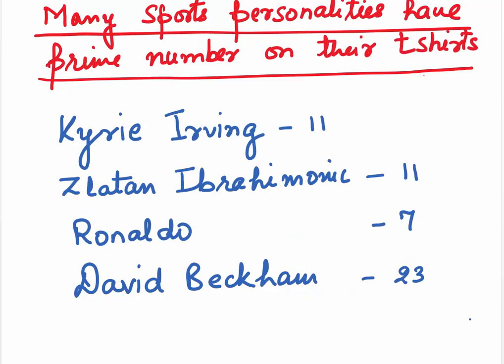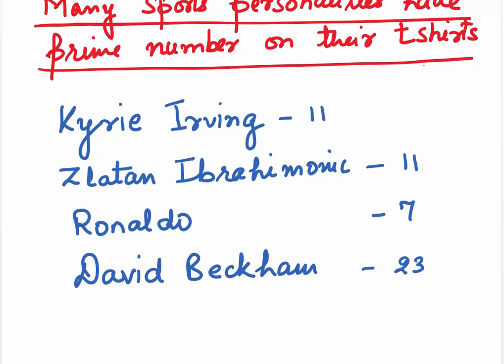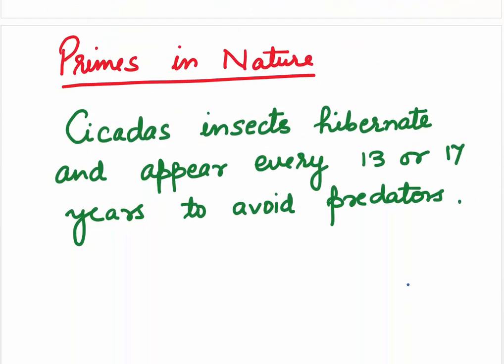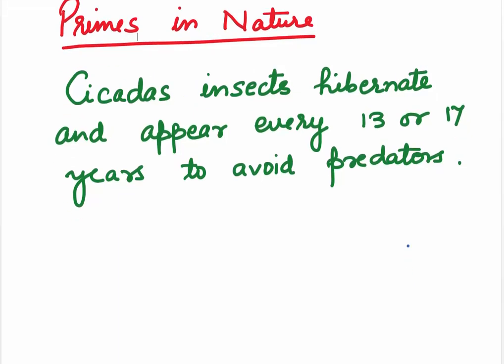Because of the uniqueness of prime numbers, there is a lot of fascination for them. Many sports personalities have prime numbers on their t-shirt. Number 23 is also the favourite of the Nobel laureate John Nash. In nature also, we can see examples of primes. The cicada insects hibernate and appear every 13 or 17 years to avoid predators.